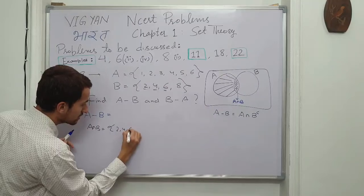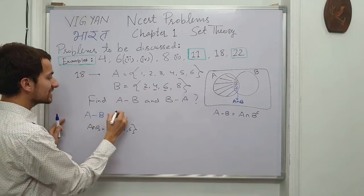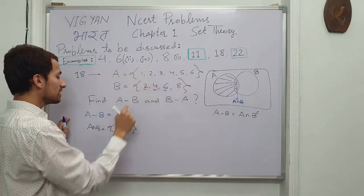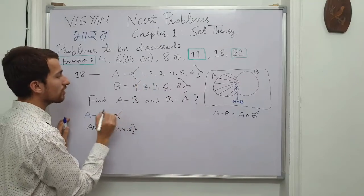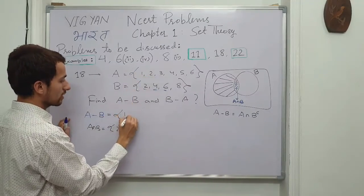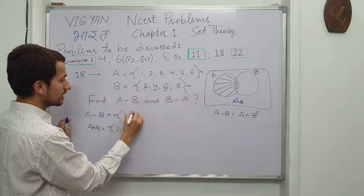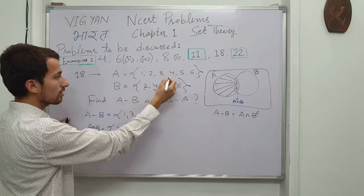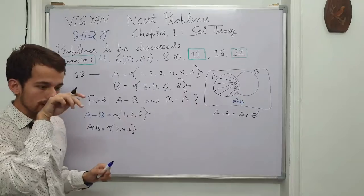And now consider set A and remove all those elements which are there in the intersection. So what we find? 1, remove 2, 3 is there, remove the 4, 5 is there. So this is the set we were looking for.